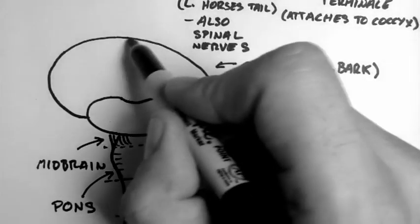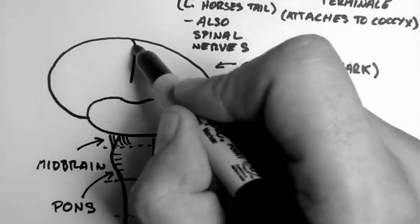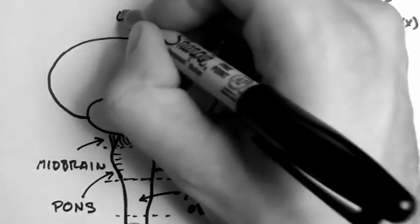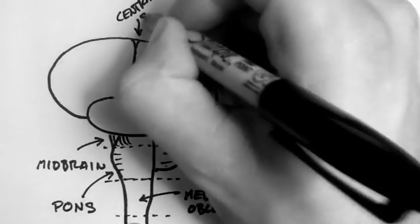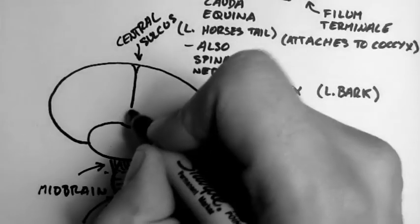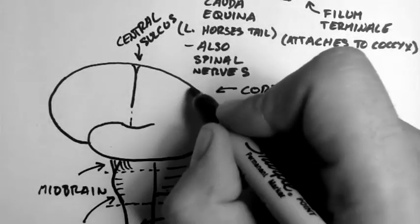Now let's have a look at the cortex. There's a very prominent separation in the brain called the central sulcus. This is a valley that runs down in the cortex. And this helps divide up the lobes of the brain.